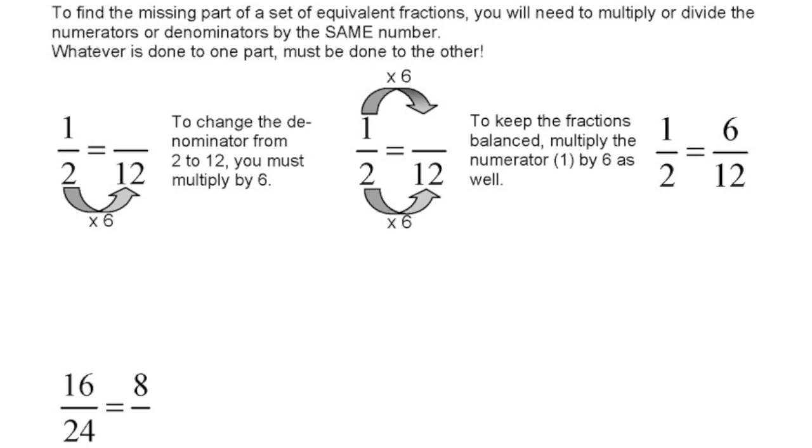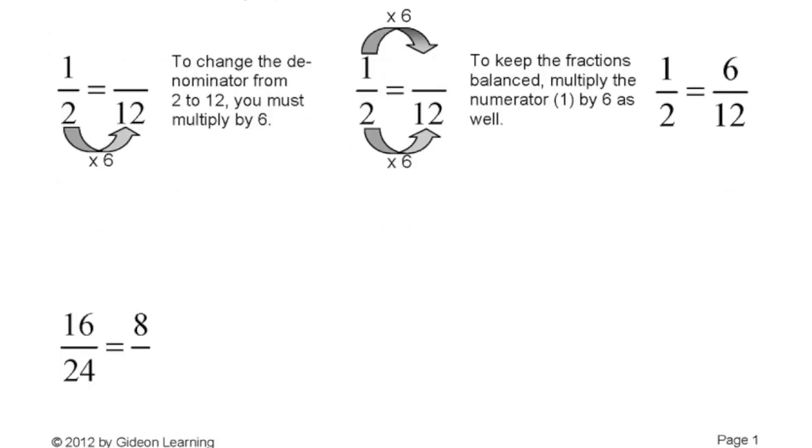And for 16 over 24, that's equal to 8 over blank. So in the previous case, we had to multiply. In this case, we're going to have to divide.